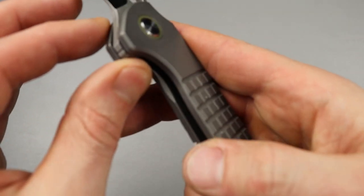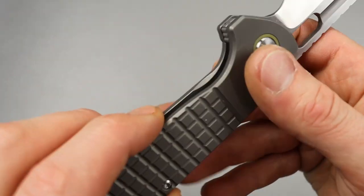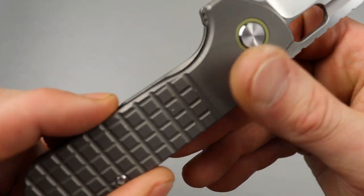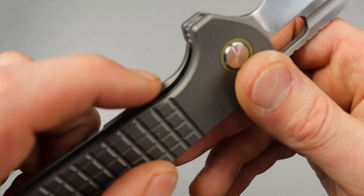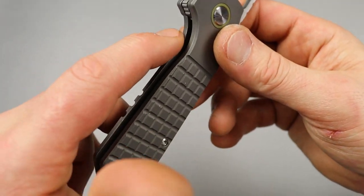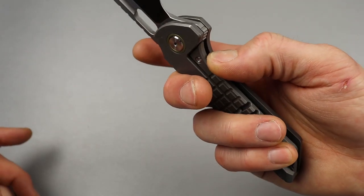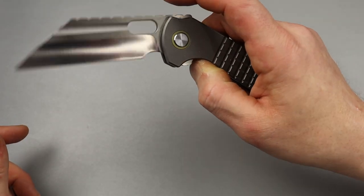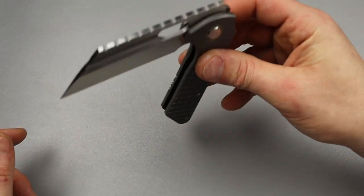Now, the access to the lock bar is really good. He did cut it out right here a little bit. And then you have a nice chamfer on the frame lock. So you can easily get to it and it is very smooth on the drop.